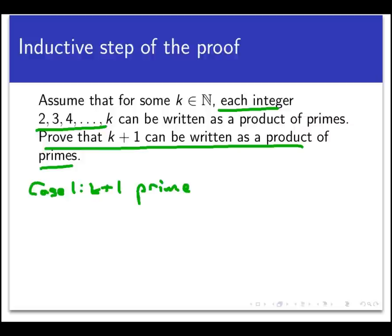So in case 1, if k plus 1 is prime, we're done because a single prime is just a one term product, and so k plus 1 can be, quote, factored into a product of primes.